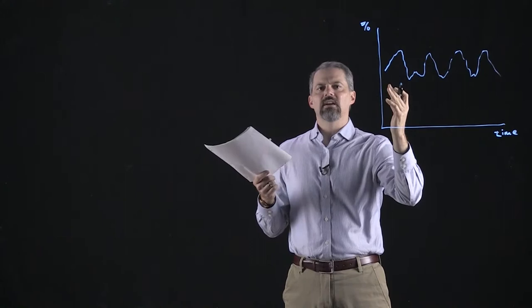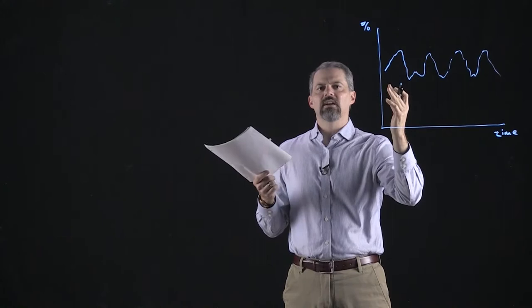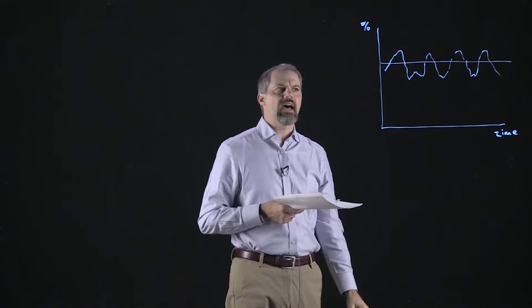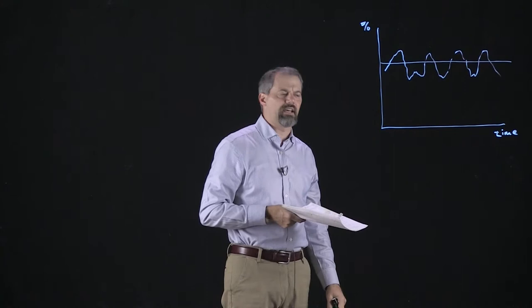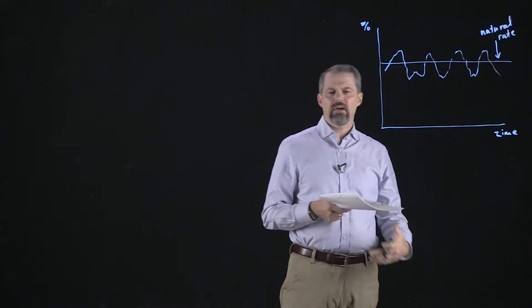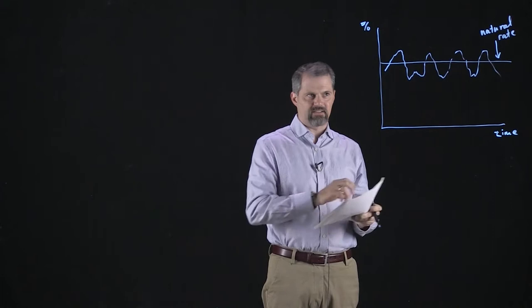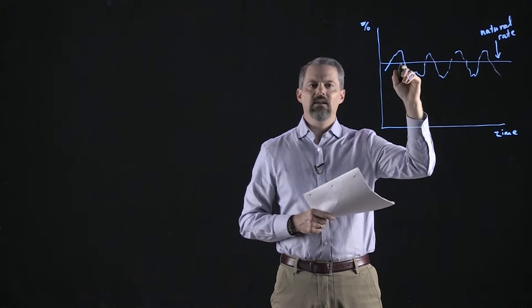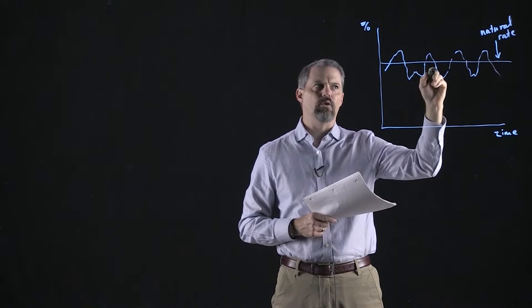If we look at the average rate of unemployment and draw a line through that, we can call this the natural rate of unemployment — the average rate of unemployment that the economy typically experiences. From one year to the next it's going to fluctuate around that, and what we talk about here is cyclical unemployment.